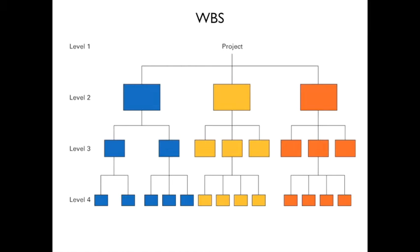Here's an example WBS. You start at the top with the project, and identify three logical pieces — say a computer, software, and user interface. The computer breaks into monitor and processor. Software breaks into requirements, coding, and testing. The user interface breaks into prototyping, working with users, and the final interface. You keep breaking the project down into pieces — that's a work breakdown structure.